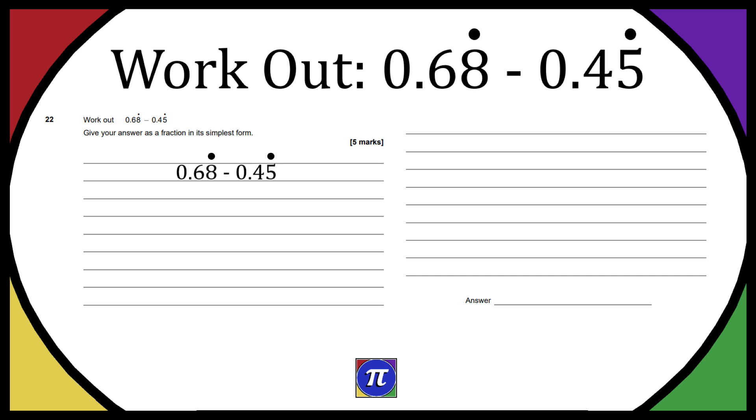So 0.68 recurring minus 0.45 recurring. If you don't know, 0.68 recurring with that dot just means 0.6888 and so on, and then the 0.45 recurring means 0.4555 and so on, pretty much forever. So we can write it as 0.68 recurring minus 0.45 recurring, and then we're going to subtract.